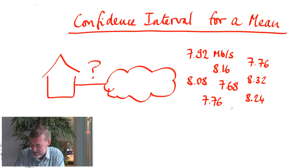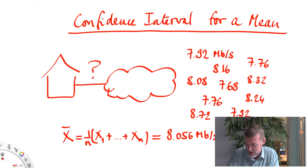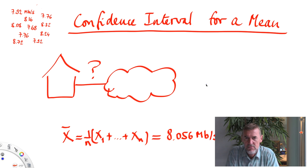So the first question is how to summarize these measurements. I can take for example the mean. Here I have 10 measurements, I compute their mean by taking the sum and divide by 10, I obtain 8.056 Mbps.